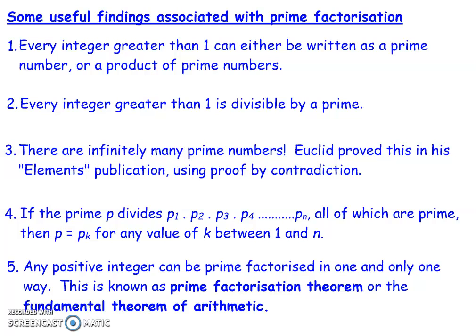That's a fairly straightforward and intuitive idea. Fifth — and this is an important one — any positive integer can be prime factorized in one and only one way. So with 2772, we couldn't factorize it any further because all the factors were prime numbers, and prime numbers can only be divided by themselves and one. We couldn't take any of those factors further, so there was only one way to do it. This is what's referred to as the prime factorization theorem, or the fundamental theorem of arithmetic. When you get to that final solution, there's no other way to get to it or represent it.